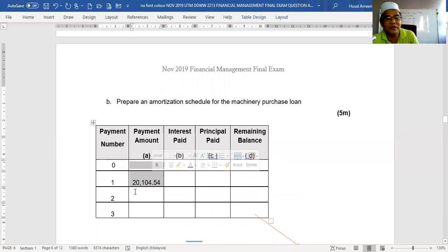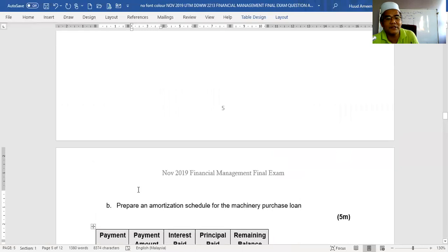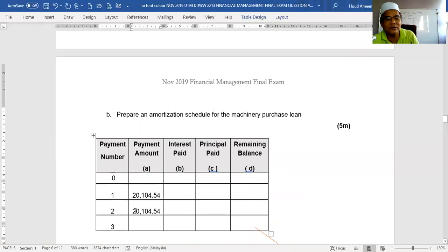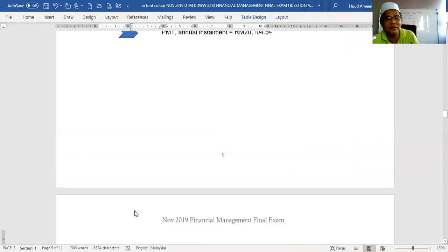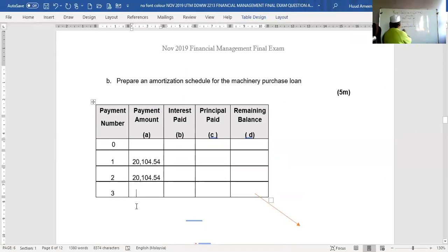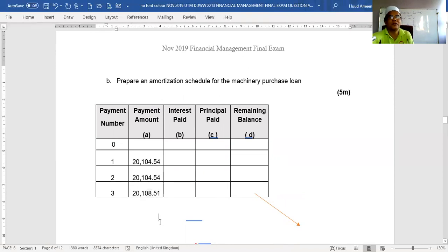And the payment amount: year 1, 20,104, refer to the above question that you have calculated earlier. Year 2 is 20,104 and year 3, do not use the same figure because we have to calculate. The total amount is 50,000. So you have to round the figure. Then you get 20,108.51. If you calculate total up, this will get 50,000.